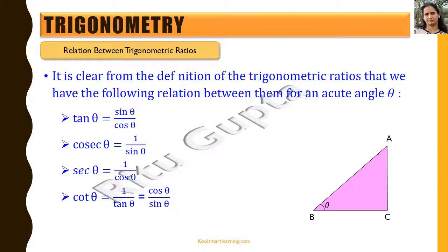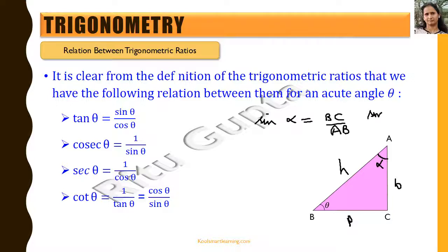Suppose instead of theta we name this angle as alpha. What will these trigonometric ratios be for angle alpha? BC will become the perpendicular and AC will become the base, while AB still remains the hypotenuse. So sin alpha will equal BC by AB, whereas sin theta was AC by AB. It is very important to understand that the perpendicular and base are decided based upon which angle we are talking about.